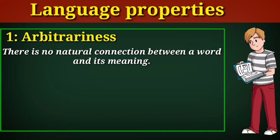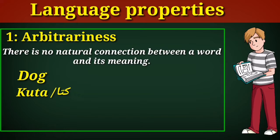Simply you can say that the word 'dog', just take this example — the word 'dog' does not have an inherited connection to the animal it represents. Because in English, this animal is called 'dog'; in Urdu, it is called 'kutta', and so on. So this property is called arbitrariness, because there is no natural connection between a word and its meaning.